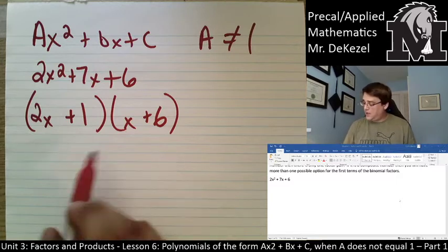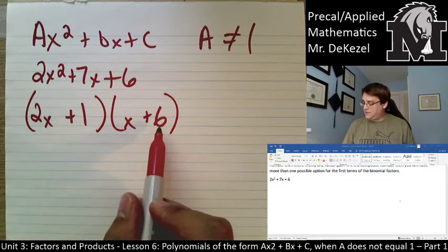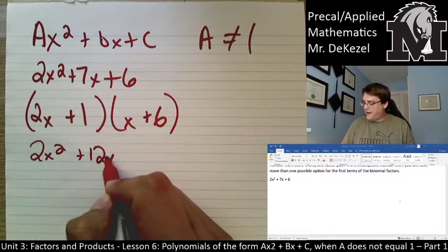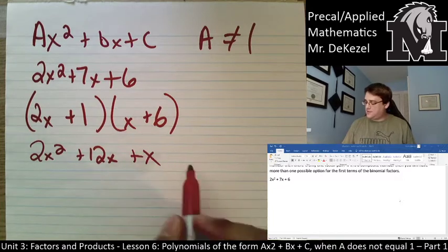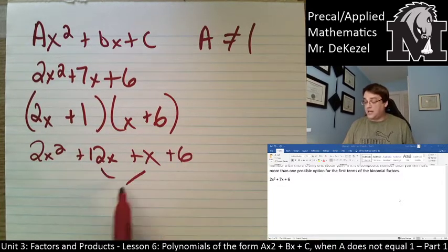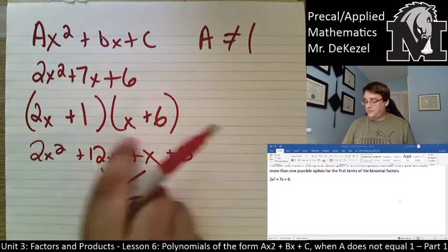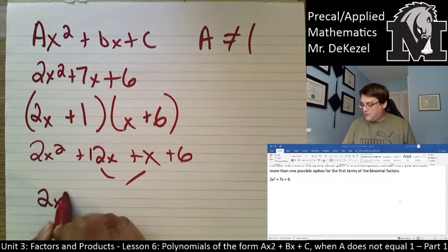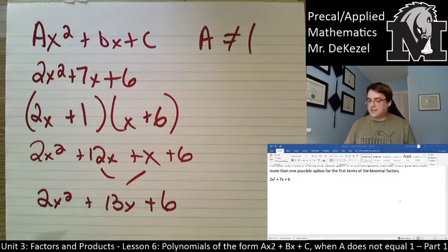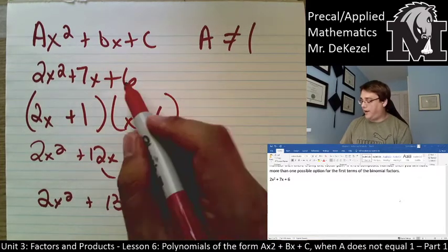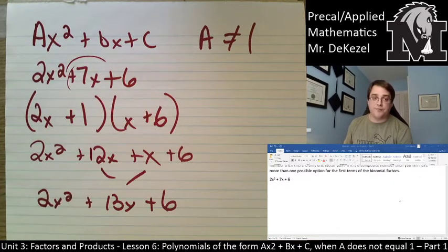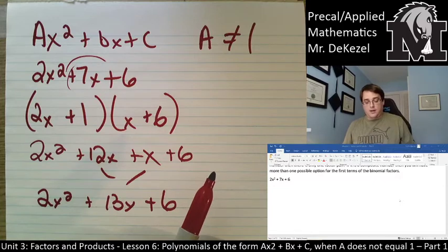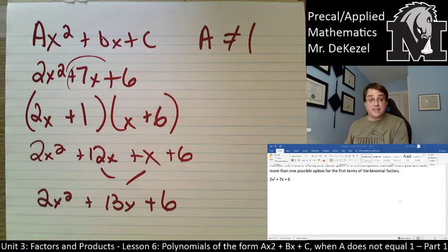Now let's do our check to see if this works. 2x times x is 2x squared. 2x times 6 is plus 12x. 1 times x is just x. And then 1 times 6 is 6. Adding the like terms, I've got 2x squared plus 13x plus 6. That is not what I had at the beginning — I needed a 7 in here. So how we usually work through this is not quite the same. We already know that 1 and 6 doesn't work.